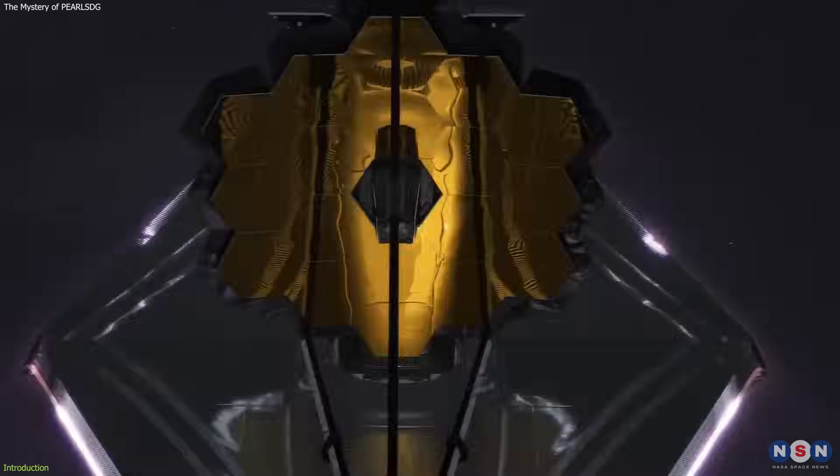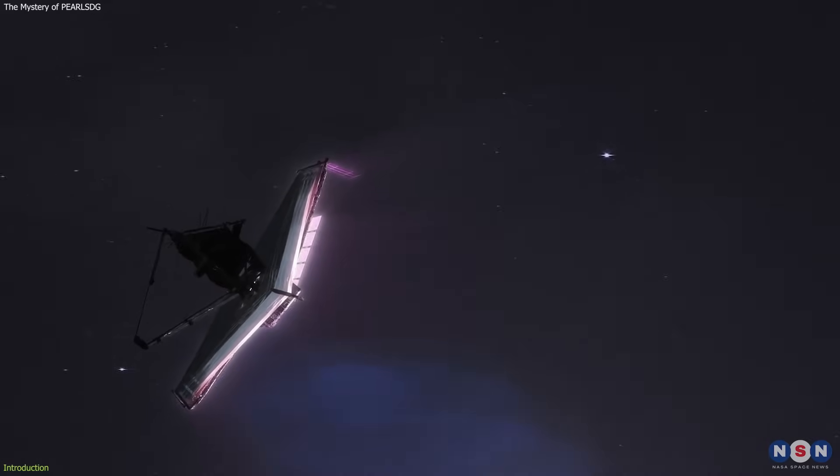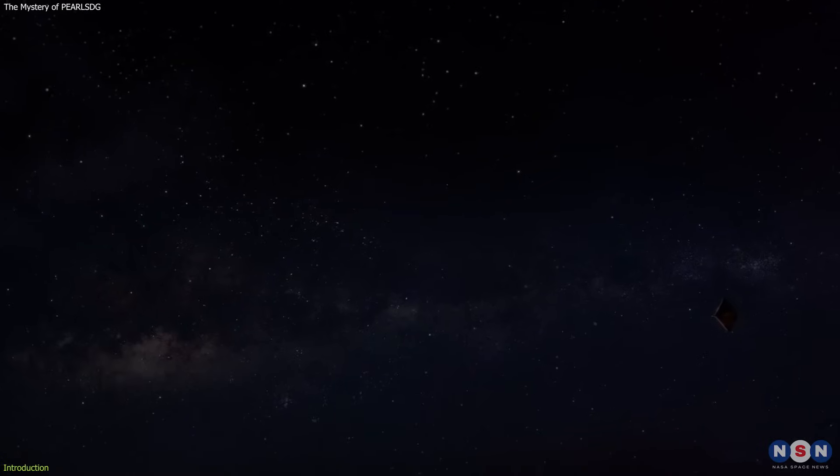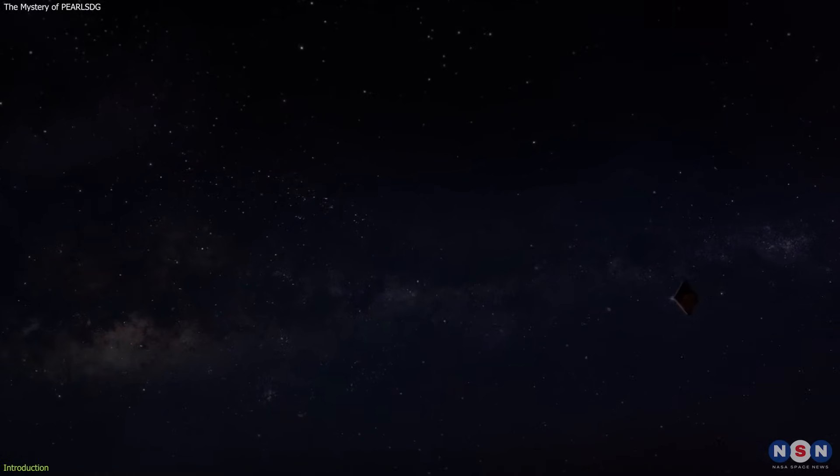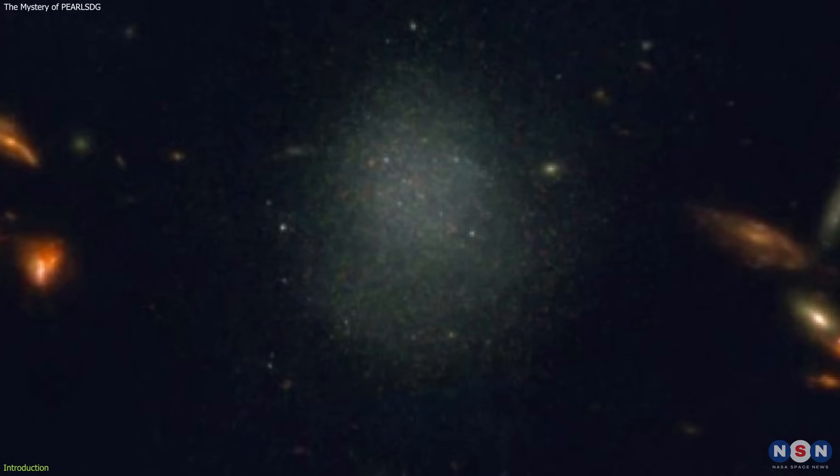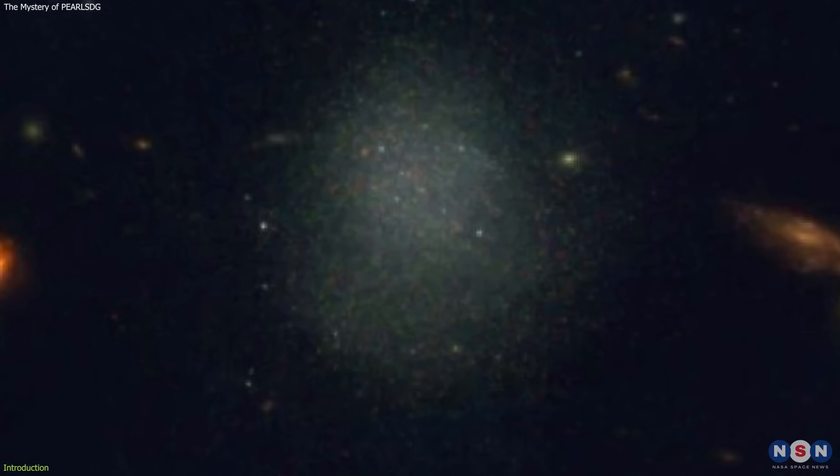They were using the James Webb Space Telescope to observe a region of the sky where no other galaxies were expected to be found. However, they found that this galaxy is very unusual because it is very old and faint.